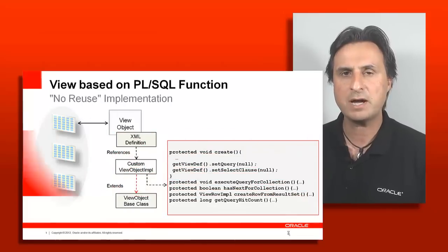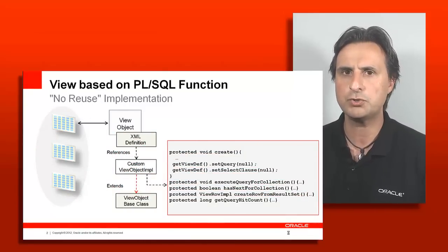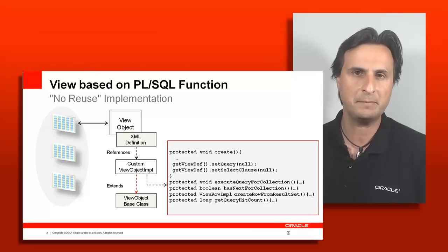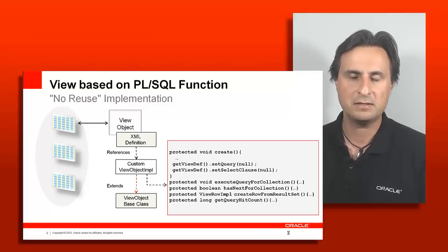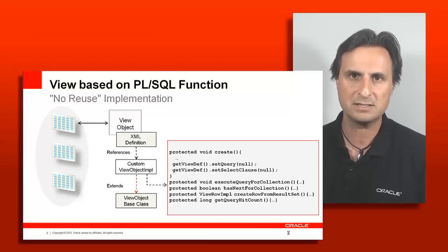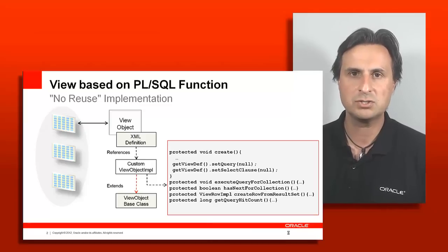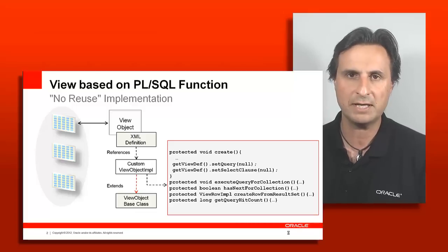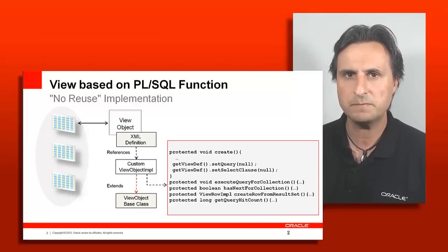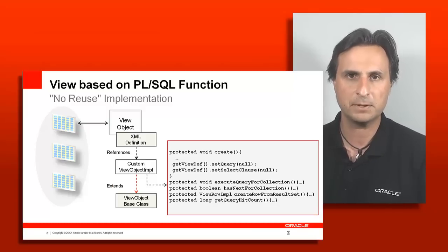Let's look at the architecture perspective for how that would work. It's a similar picture to what I showed in the last recording where we talked about the PLSQL API. You see that the view object gets its definition from an XML file, which is used to configure a base class at runtime. This base class is what you will have to replace with a custom class, which you do by going to your view object in the application navigator and double-clicking it to open the editor, choosing the Java option and creating the implementation class.